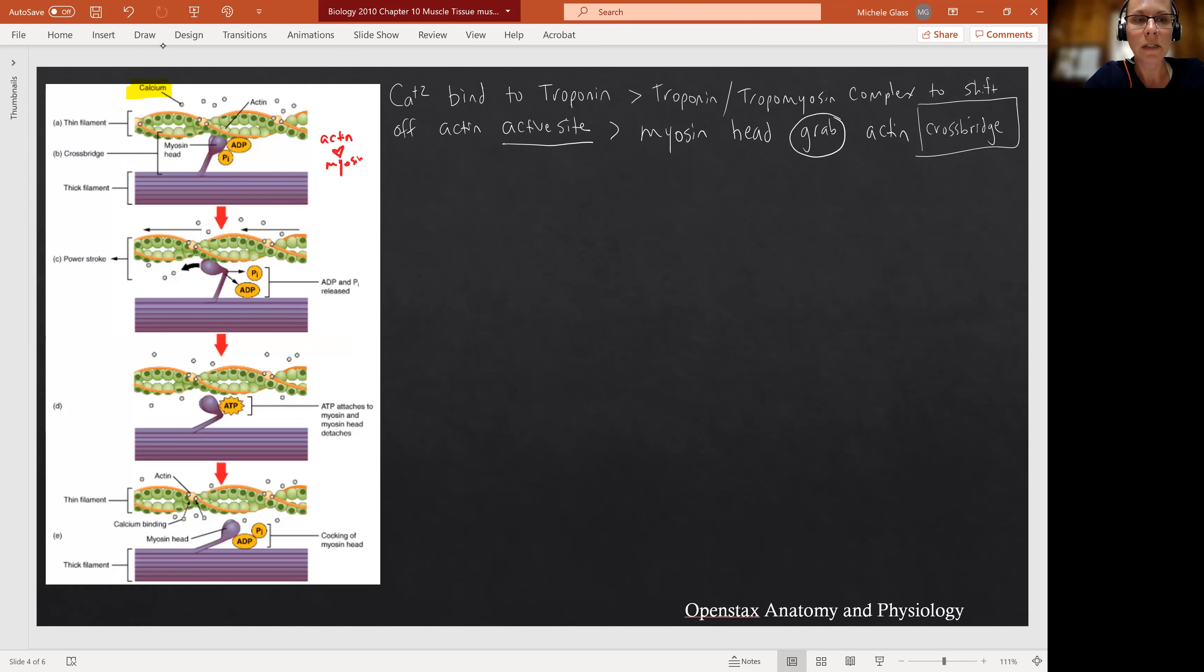So when we go back to this picture that we were looking at a minute ago, and we see the cross-bridge formation, notice the myosin head is holding on to the ADP and the phosphate. So that tells us that that head is energized, okay? That head is in that cocked position. It's energized, it's cocked, now it's grabbed hold of the actin because the calcium has bound to the troponin, and the troponin-tropomyosin complex is totally out of the way.